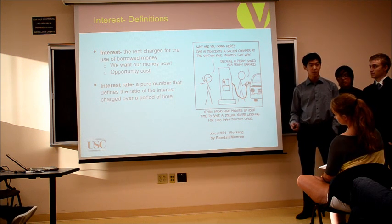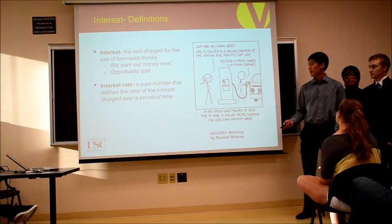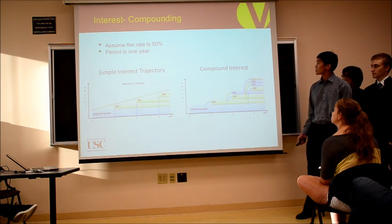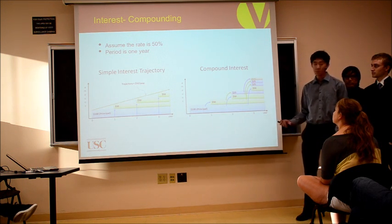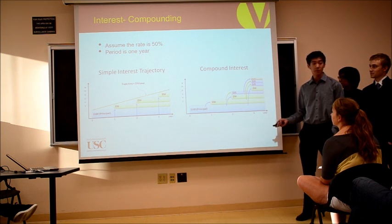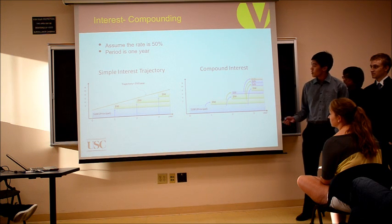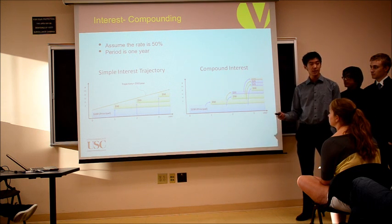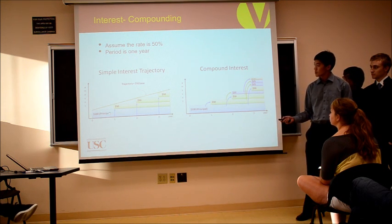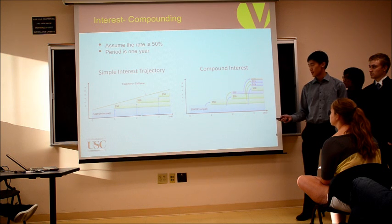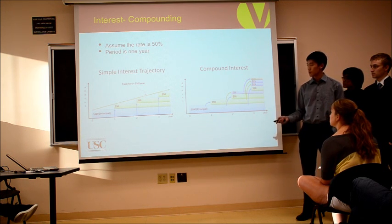Another definition: the interest rate is a pure mathematical number represented as a percentage that shows the interest charge over a period of time. Here are a few simple examples. Let's assume a very generous rate of 50%, as used in this example, and the period is one year per compound. In the simple interest example, you don't compound — you just get interest based off your principal, which is $100. So at the end of year one you get $50, and at the end of year two you again get $50.